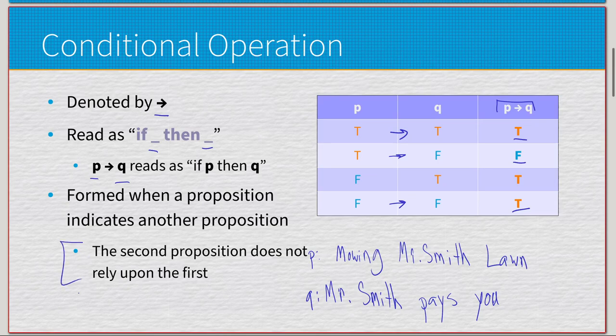Now the last one, and this is the one that trips up many people: the second proposition does not rely upon the first. So this is if I do not mow the lawn then I get paid. You think why am I getting paid if I don't mow the lawn? Because this implication of false implies true results in true.